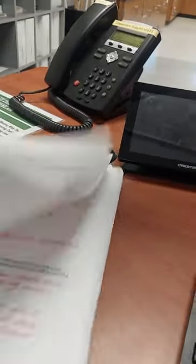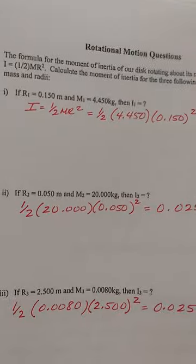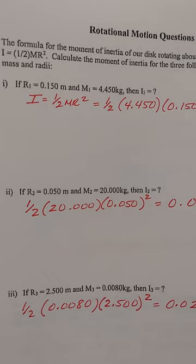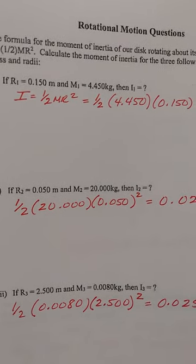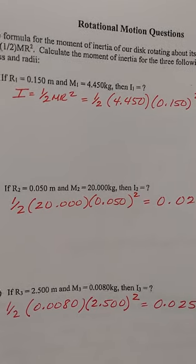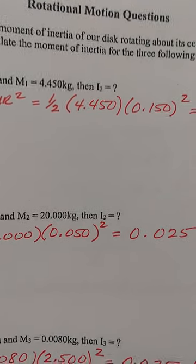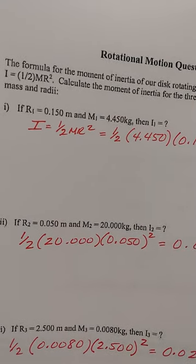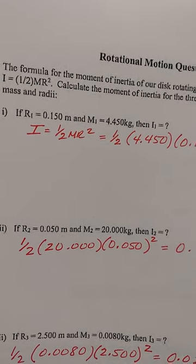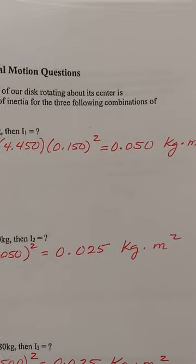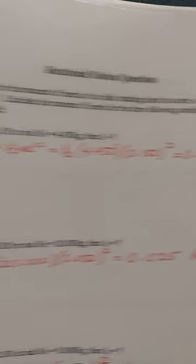Then you want to go to your worksheet. And you'll answer your simple questions. One, if R sub 1 equals 0.150 meters and M sub 1 equals 4.450 kilograms, then what is I sub 1? So you simply plug and chug. You know that the equation for a solid disk is one half MR squared. So you plug in your information and you receive your rotational inertia for question number one.